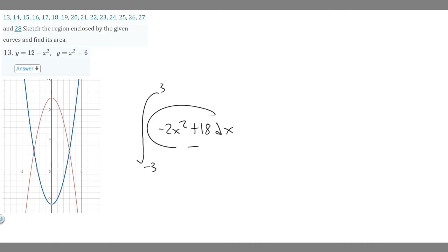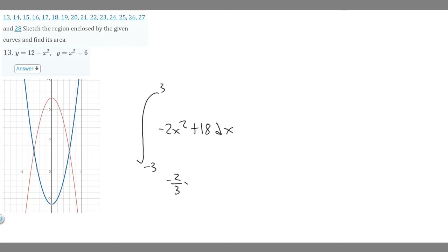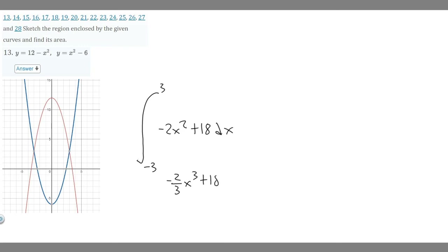Let's find the antiderivative of the integrand. The antiderivative of minus 2x squared is minus 2 over 3 times x cubed, because x squared integrates to x cubed over 3 and we multiply by minus 2. For the constant 18, we just add the variable next to it, giving plus 18x. We evaluate this from minus 3 to 3.